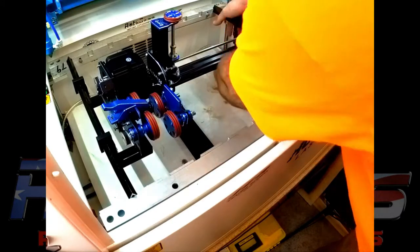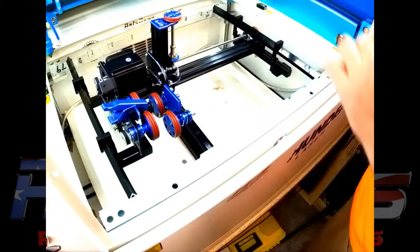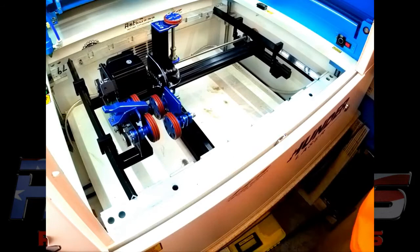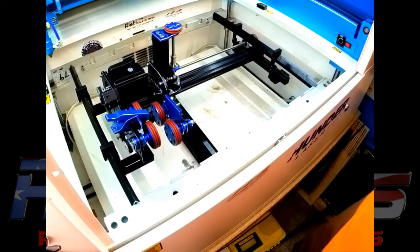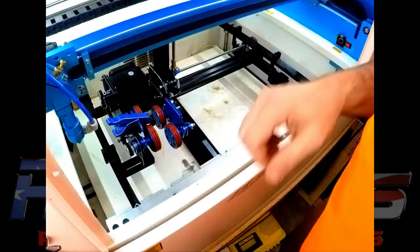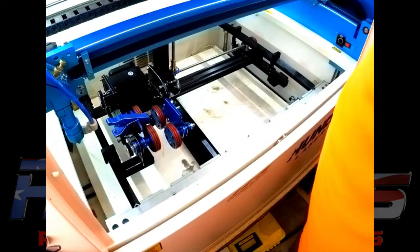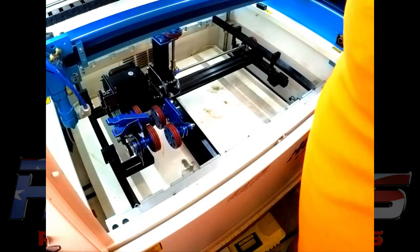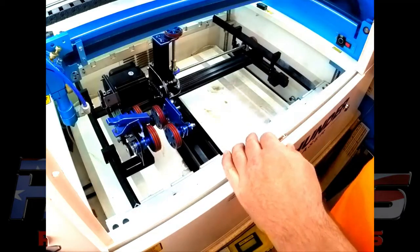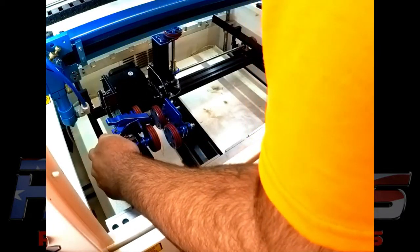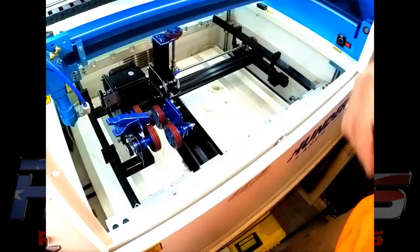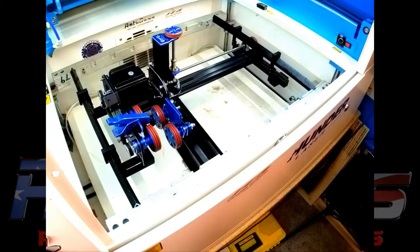Then once it's all locked into place, you can double check your alignment. Make sure you lower it down so you don't hit the, bring your gantry forward. Take a look down the gantry, make sure everything's still straight. Then you're good to go.